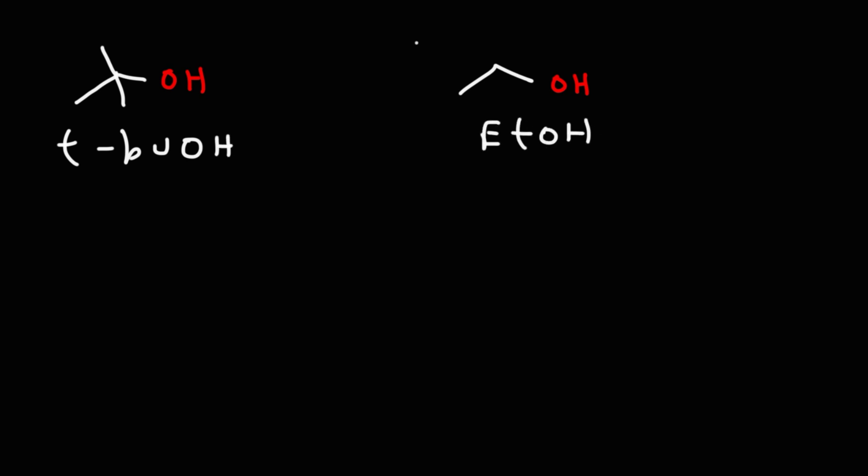The pKa for tert-butanol is 18. The pKa for ethanol is 16. Ethanol is the stronger acid because it has the lower pKa value. The question is why is ethanol so much more acidic than tert-butanol?